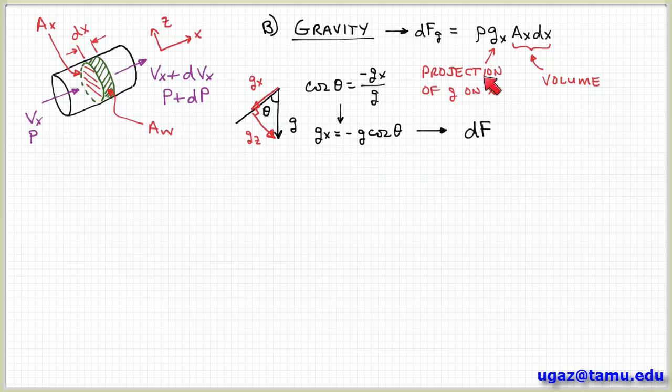So now we can substitute that in for the x component of the gravitational acceleration. We get that dF_gravity is equal to minus ρg cosine θ A_x dx. So that's fine, but we could make this a little more useful.